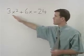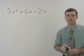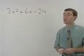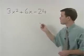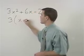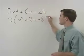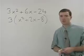Notice that for every term in your original problem, there's a factor of 3. That means that a 3 can factor out of the trinomial, and you're left with x squared plus 2x minus 8 inside the parentheses.